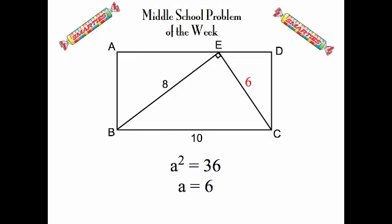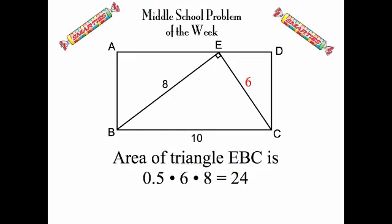So that'll help us get the area of the right triangle. We multiply the two legs, the 6 and the 8, and divide by 2 — or as shown here, multiply by 0.5. The area of the triangle inside the rectangle is 24.